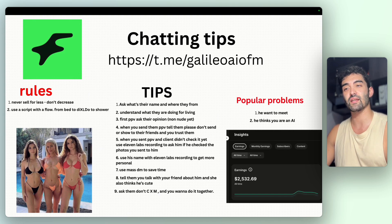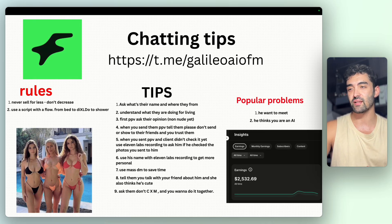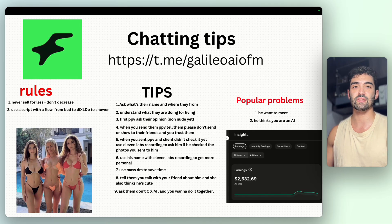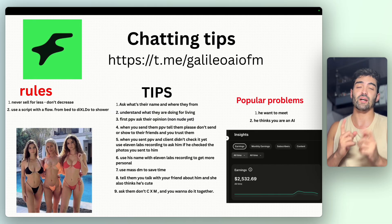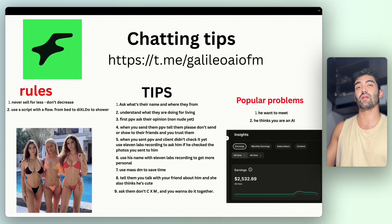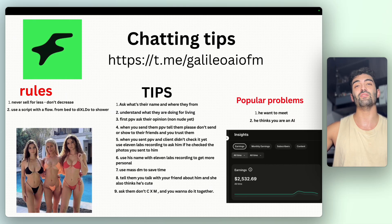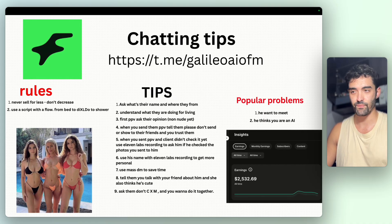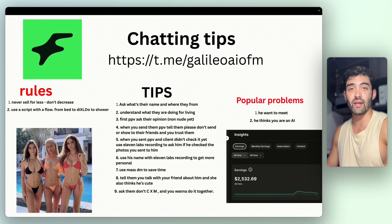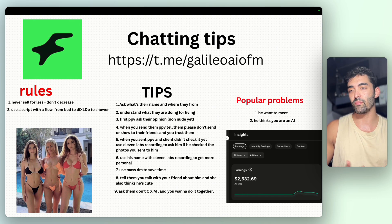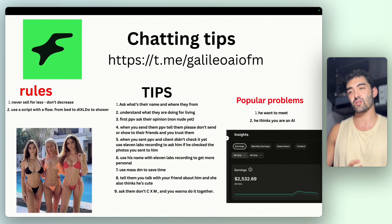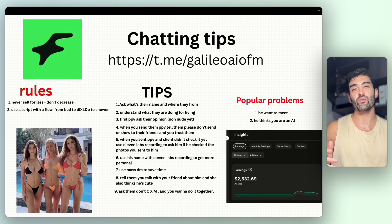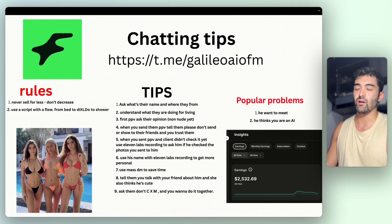Fifth tip: if a client hasn't checked a PPV yet, use an ElevenLabs voice recording to ask if he checked the photos. Prepare a recording you can reuse once per client — something like 'Hey babe, did you check my photos? I really want to know your opinion.' When they hear a voice, it's more convincing and can push them to buy. Also, once you have their name saved, use it in personalized voice messages like 'Thank you, James, for buying!'